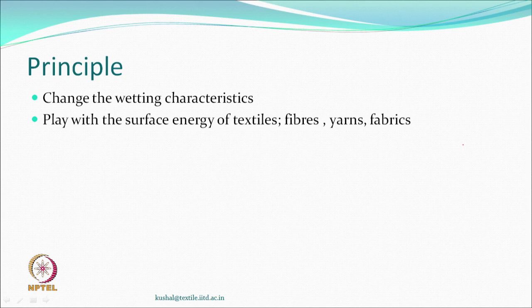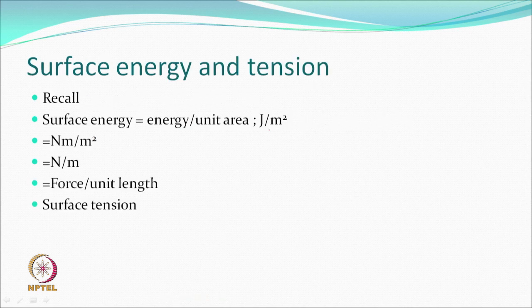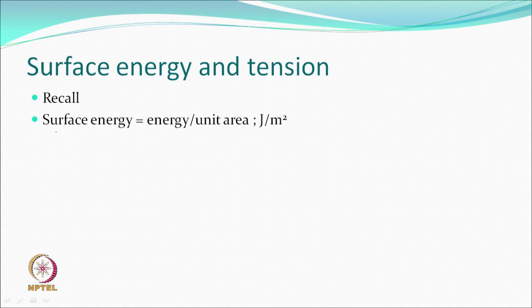This means we want to change the wetting characteristics of a fabric. In some sense, we are going to be playing with the surface energy of textile fibers, yarns, and fabric. Recall your early days of learning physics: surface energy is energy per unit area, expressed as joules per meter squared. This can also be expressed as Newton meter per meter squared, which simplifies to Newton per meter — force per unit length — which is surface tension.